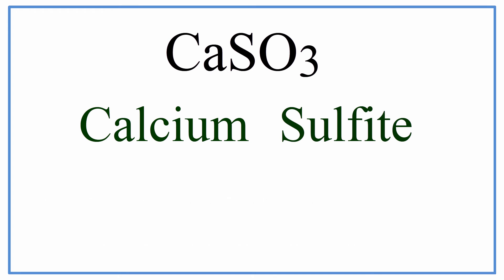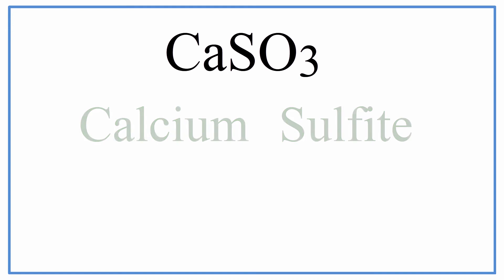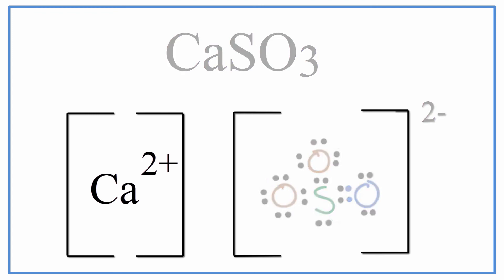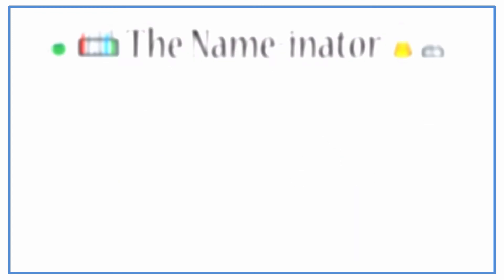We can also represent this as a Lewis structure, and that might look something like this. Note that CaSO3 is normally found in crystals, and this is just a representation of one formula unit of the calcium sulfite compound.